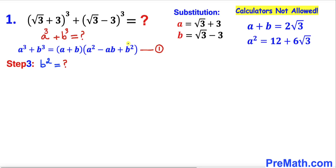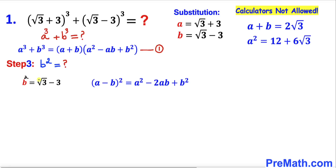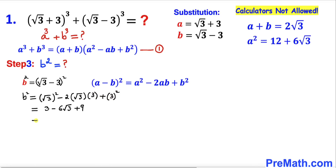Now let's calculate the value of b squared. Our b equals square root of 3 minus 3. Applying the identity (a minus b) whole squared, b squared becomes: square root of 3 whole squared, minus 2 times square root of 3 times 3, plus 3 squared. Combining like terms gives us 12 minus 6 times square root of 3. So b squared equals 12 minus 6 root 3.